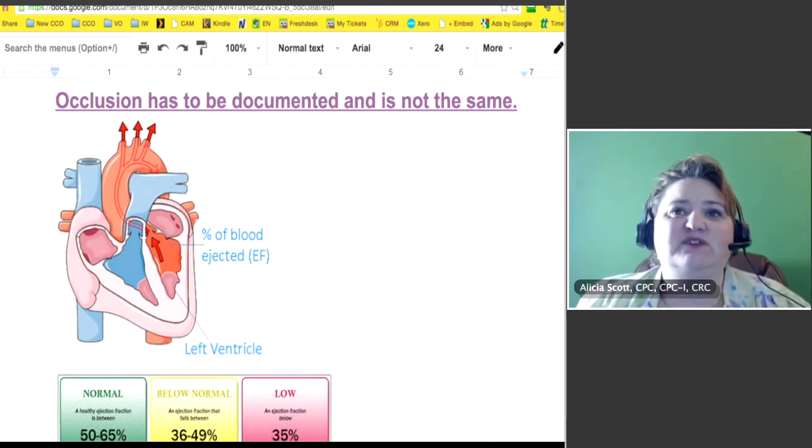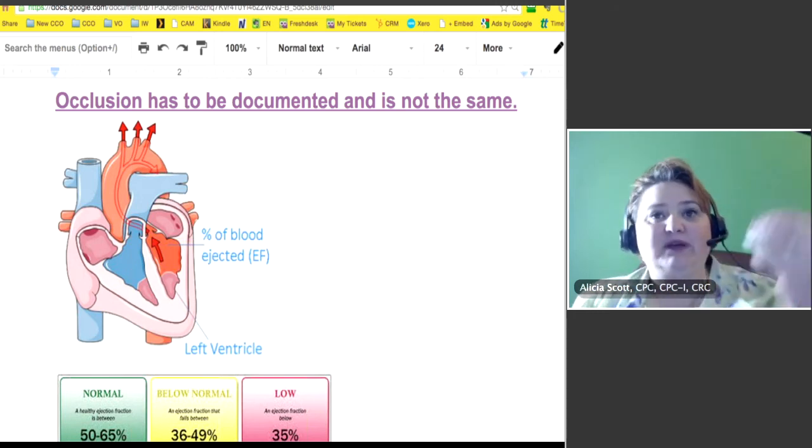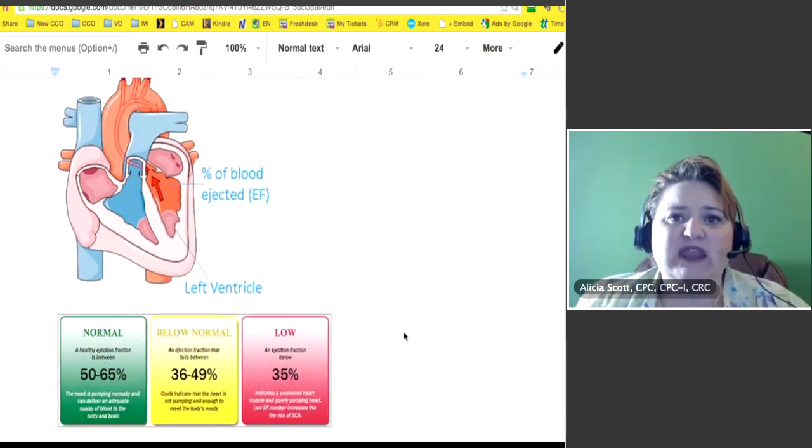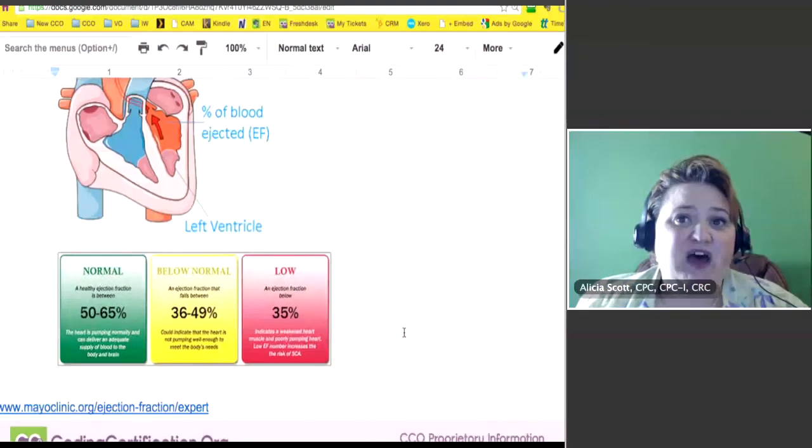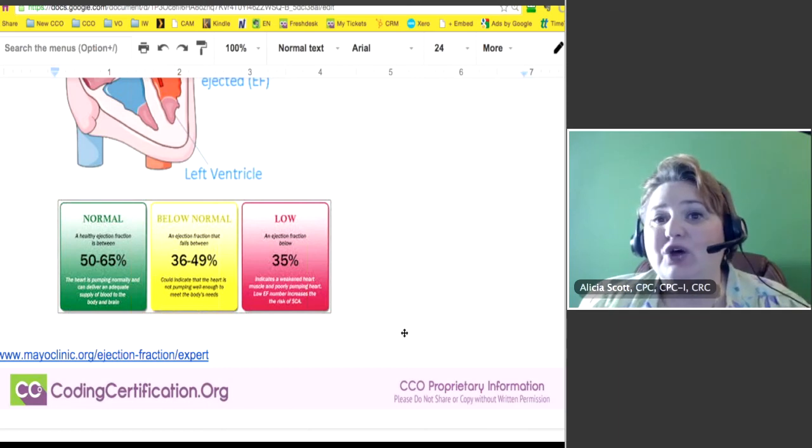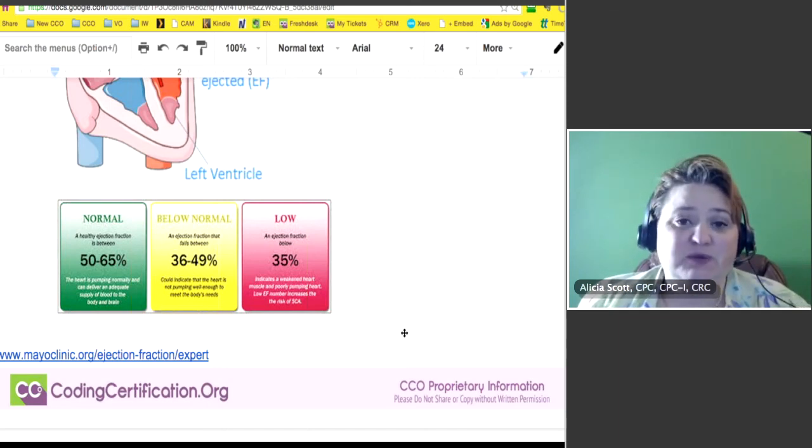There, we've got the percentage of blood ejected up into the atrium and that's the left ventricle. Right there at the last, I added normal 50 to 65, below normal is 36 to 49. Anything below 35 is just real bad news.